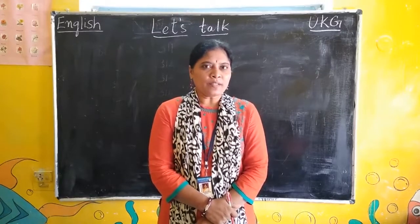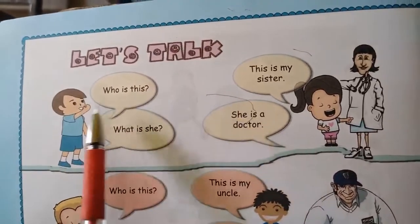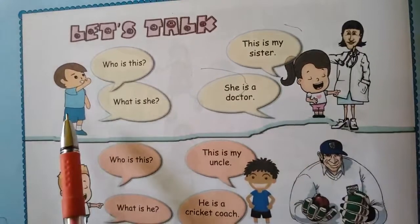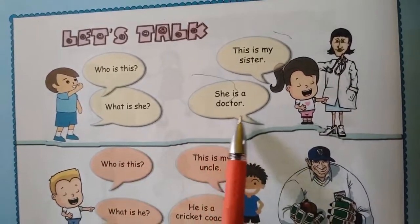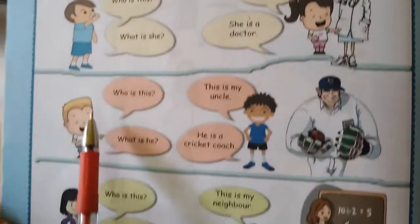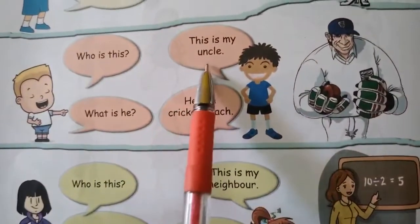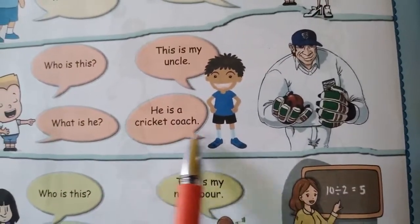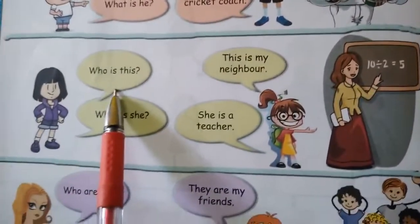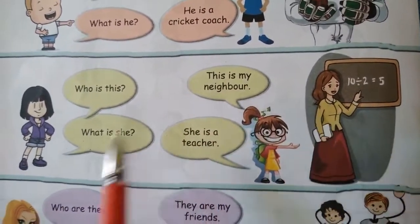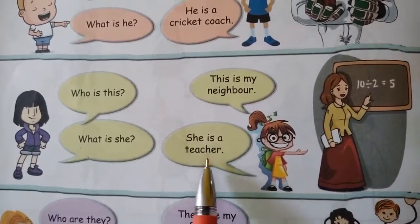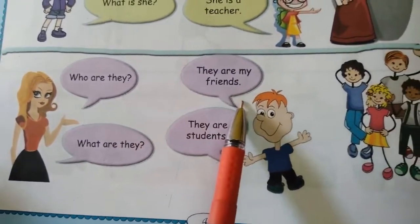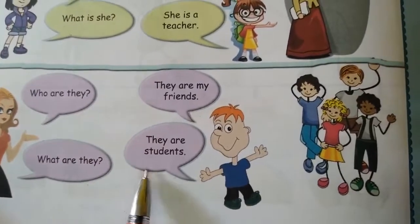Let us read that one. Let's talk. Who is this? This is my sister. What is she? She is a doctor. Who is this? This is my uncle. What is he? He is a cricket coach. Who is this? This is my neighbor. What is she? She is a teacher. Who are they? They are my friends. What are they? They are students.